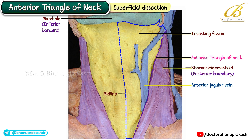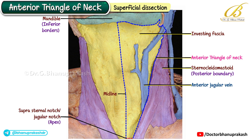The posterior boundary of the anterior triangle is formed by the anterior border of the sternocleidomastoid. While the base lies along the lower border of the mandible, the apex is located at the suprasternal or jugular notch, and the roof of the triangle is formed by the investing fascia, which is clearly seen in this dissection.